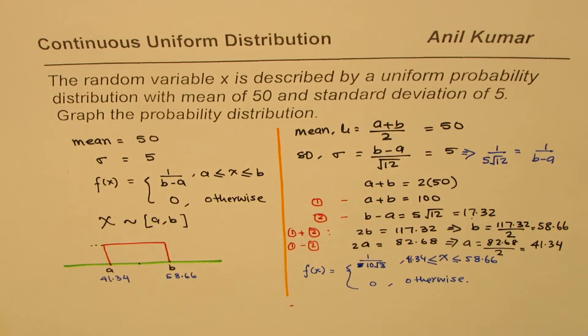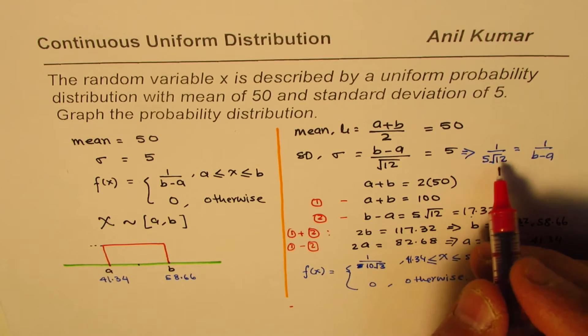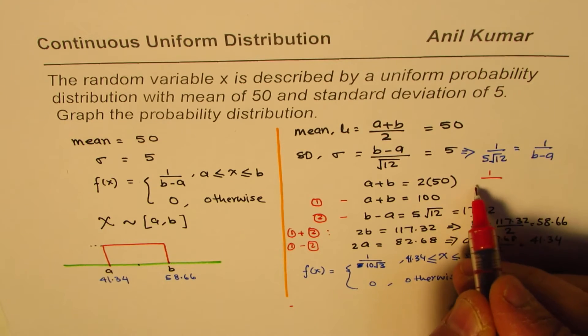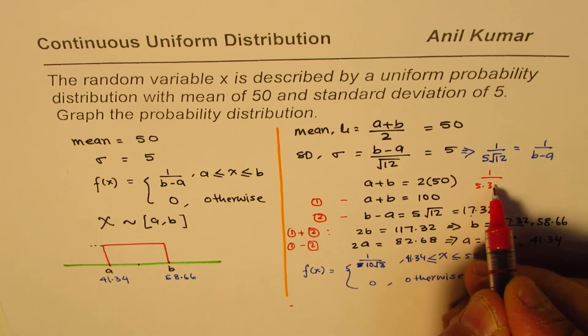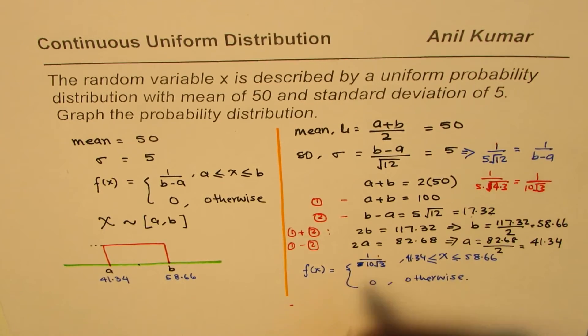So that is how we could do it. I did a few shortcuts here, let me show you that. So when we say 1 over 5 square root 12, square root 12 is square root of 4 times 3. And square root of 4 is 2. So when you bring out 2, you get 10 square root 3. So that is this function which we wrote here.